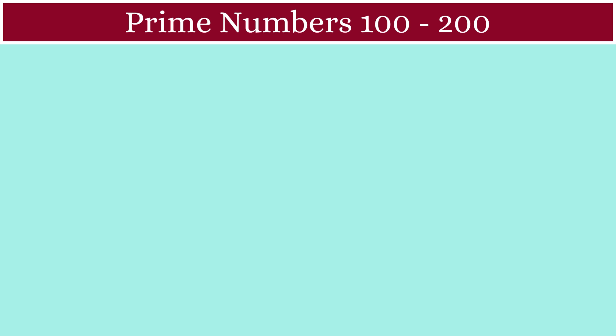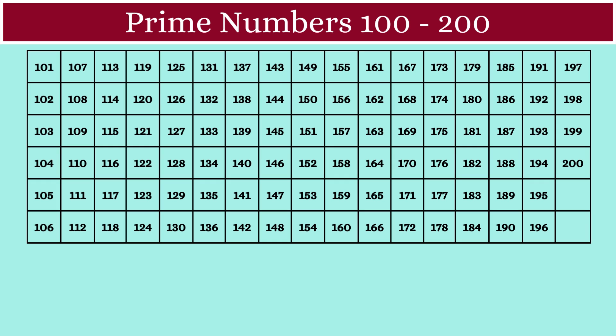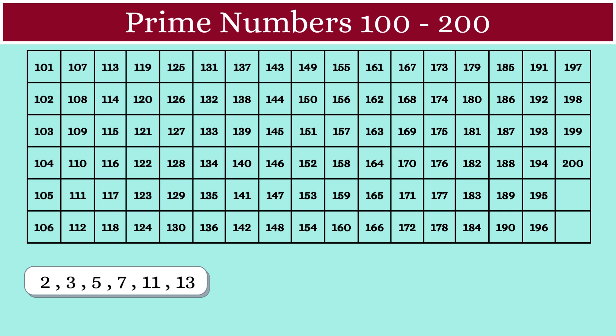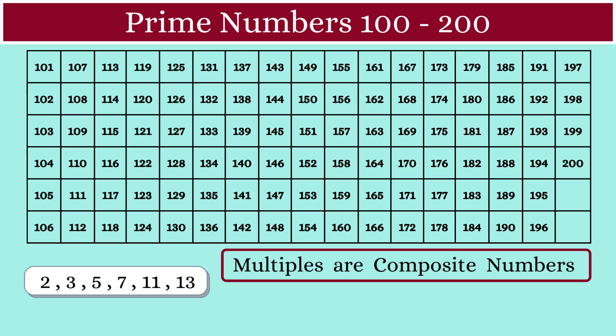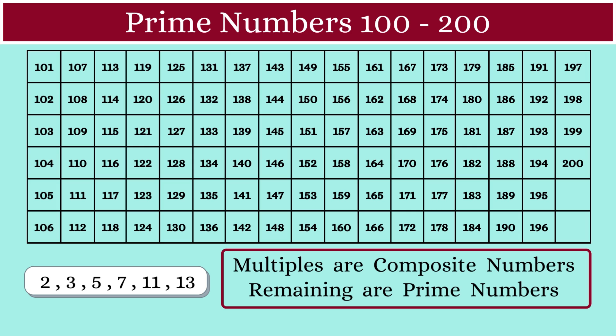Let's learn to find out the prime numbers from 100 to 200. As a first step, we will list down the first 6 prime numbers: 2, 3, 5, 7, 11, and 13. What we will be doing is we will mark all the multiples of these 6 numbers as composite numbers. And then all the unmarked numbers will be the prime numbers. Let's first start with 2.